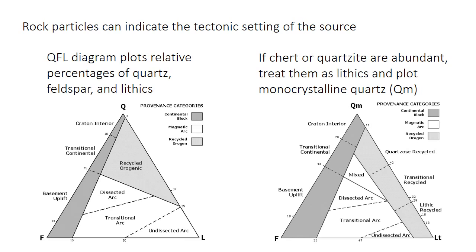To finish this video, I'll walk through a few examples of some techniques used in provenance analysis. A real standby method is ternary diagrams. The most common one is the QFL diagram, which plots the composition of a sandstone — the amount of quartz, the amount of feldspar, and the amount of lithic or rock fragments. This can be used to distinguish sediments from different tectonic settings.